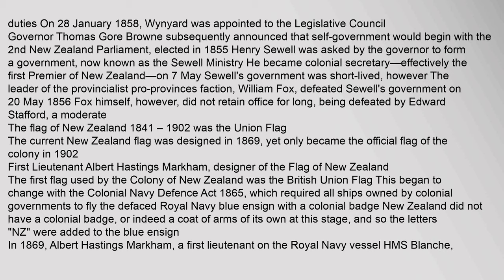1st Lieutenant Albert Hastings Markham was the designer of the flag of New Zealand. The first flag used by the colony of New Zealand was the British Union flag. This began to change with the Colonial Navy Defence Act 1865, which required all ships owned by colonial governments to fly the defaced Royal Navy Blue Ensign with a colonial badge. New Zealand did not have a colonial badge, or indeed a coat of arms of its own at this stage, and so the letters 'NZ' were added to the Blue Ensign in 1869.